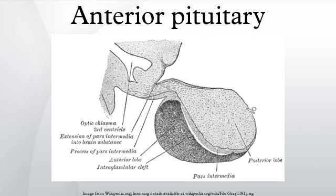Structure: The pituitary gland is a pea-sized gland that sits in a protective bony enclosure called the sella turcica. It is composed of three lobes: the anterior, intermediate, and posterior lobes. In many animals, these lobes are distinct. However, in humans, the intermediate lobe is but a few cell layers thick and indistinct.